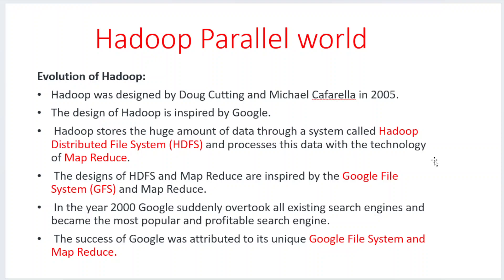First we will see the history of Hadoop. Hadoop was actually designed by two scientists, Doug Cutting and Mike Cafarella, in the year 2005. The design of Hadoop was inspired by Google. Hadoop stores huge amounts of data through the Hadoop Distributed File System and processes this data with MapReduce. The designs of HDFS and MapReduce were inspired completely by the Google File System architecture and Google's MapReduce.